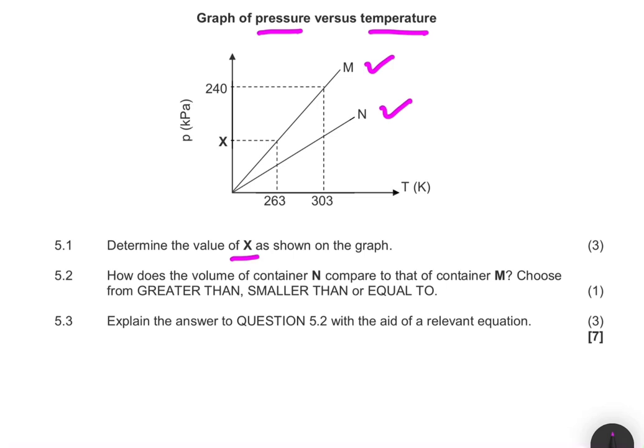So let's look at X. X is on the y-axis where we have the pressure in kilopascals, and then on the x-axis we have the temperature in Kelvin. When the temperature is 263, the pressure in container M is X.